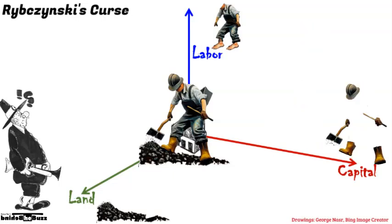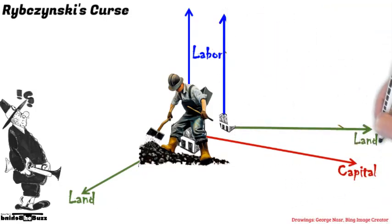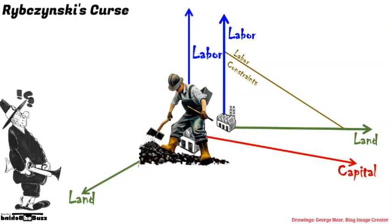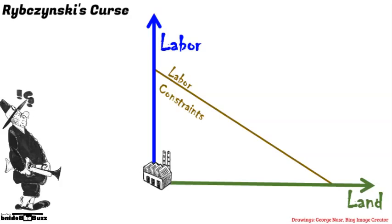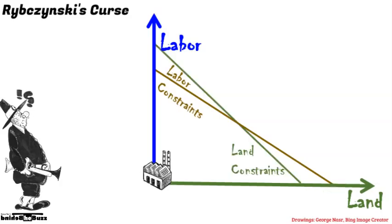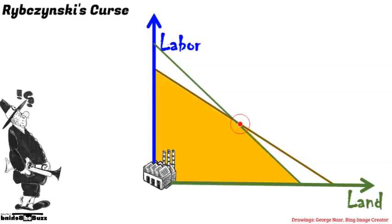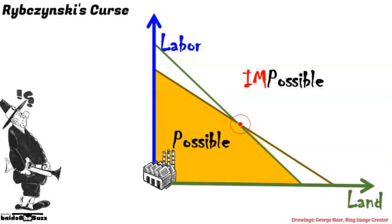Each one of those factors has its own constraints. Any economic activity is a balancing act. When any of those factors vary, the others adjust, and the economy remains balanced. We can visualize this linkage in a simple plot, for example between labor and land. Each factor has its own sets of constraints, shown here as lines. Those lines intersect to form a boundary of possibilities. Within it, economic activity is possible.